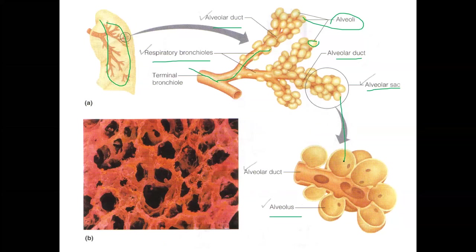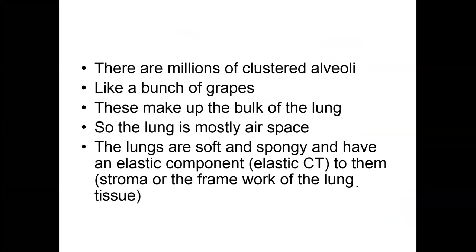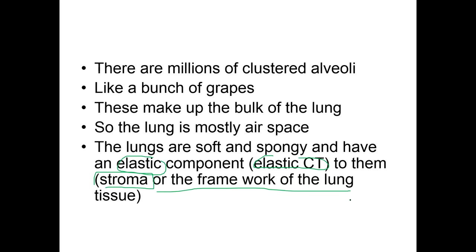When you zoom in and cut the alveoli in half, you'll notice they are one cell layer thin, which allows for gas exchange very easily. The lungs also have an elastic connective tissue component that creates the stroma or framework of the lung. People can lose this over time as they age, making it more difficult to breathe. Smoking accelerates that process, as do chronic reoccurring infections and breathing in harmful substances like coal dust, factory dust, or sand.